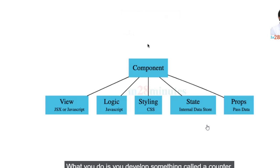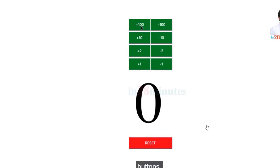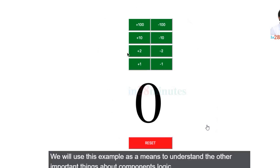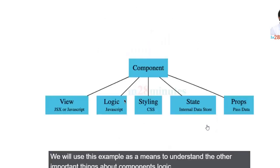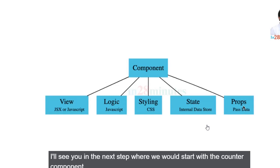To help us understand these concepts, we'll develop something called a counter — a simple pure front-end counter where pressing buttons will increment or decrement the value, and a reset button at the bottom resets the entire state. We'll use this example as a means to understand logic, styling, state, and props. I'll see you in the next step where we start with the counter component.